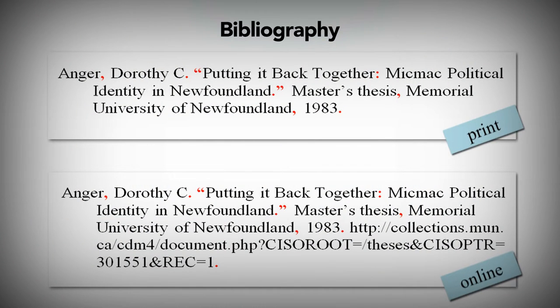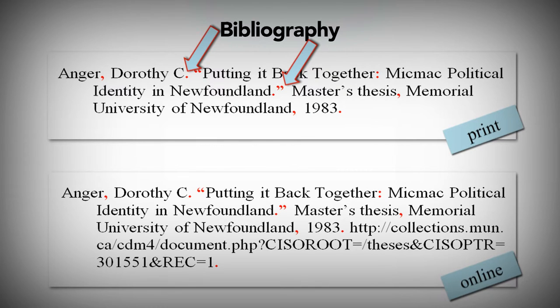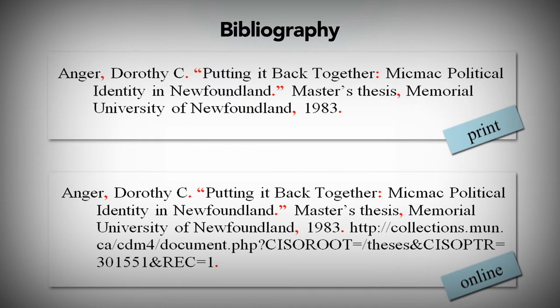Next, let's look at how that information would look in your bibliography. In your bibliography, put the author's last name first. There are also differences in punctuation — in some places where you used a comma in the note, you use a period in the bibliography, and there are no brackets around the publication information. In your bibliography, the first line of each citation is left-aligned and the following lines are indented.